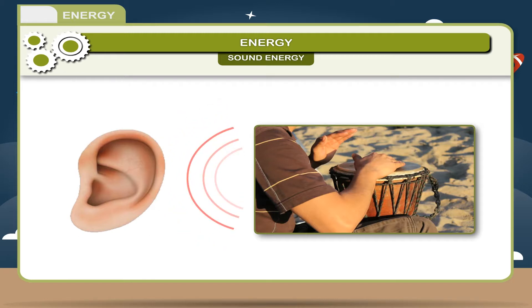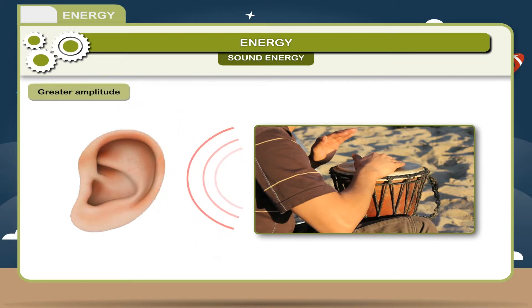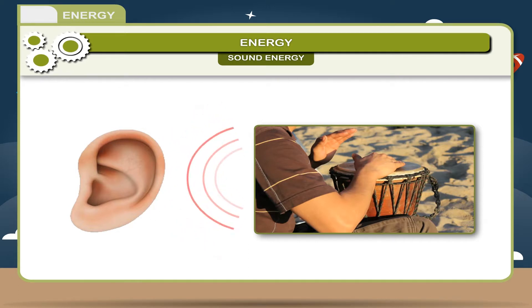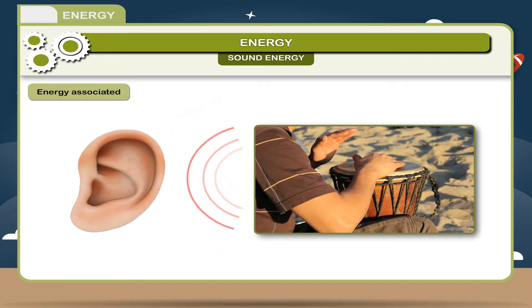If you strike the drum harder, the membrane vibrates with a greater amplitude. As a result, a louder sound is heard. Thus, loudness of sound depends on the energy associated with it.